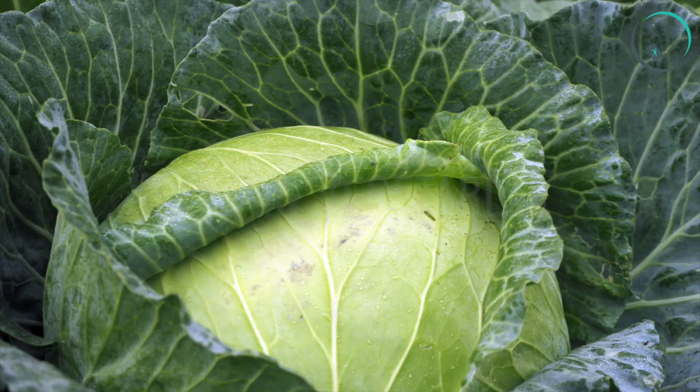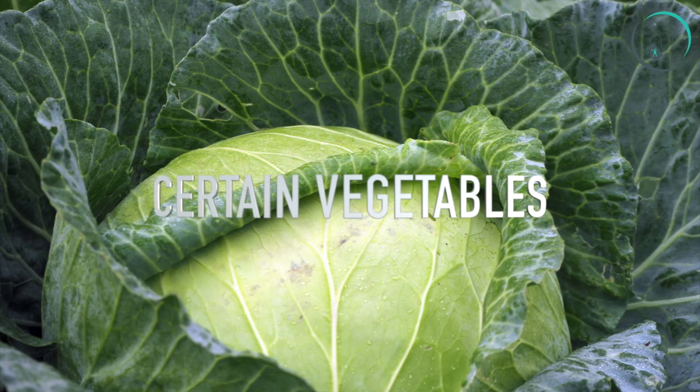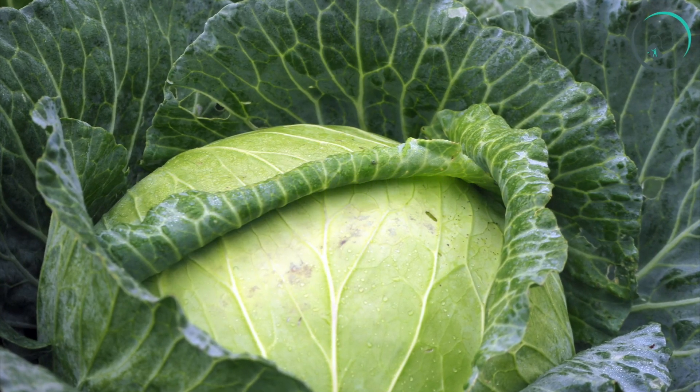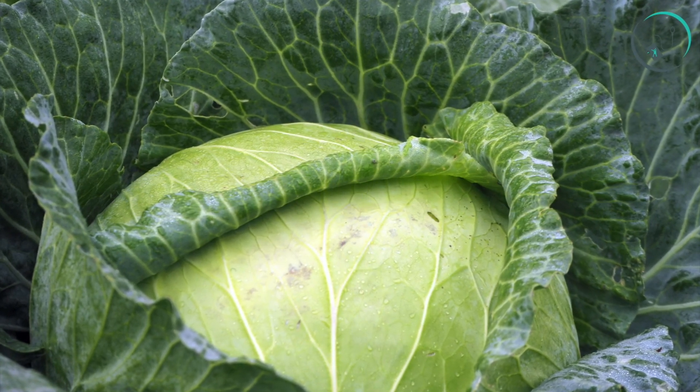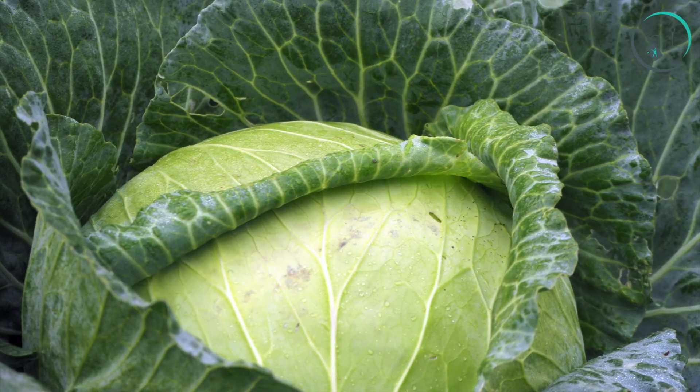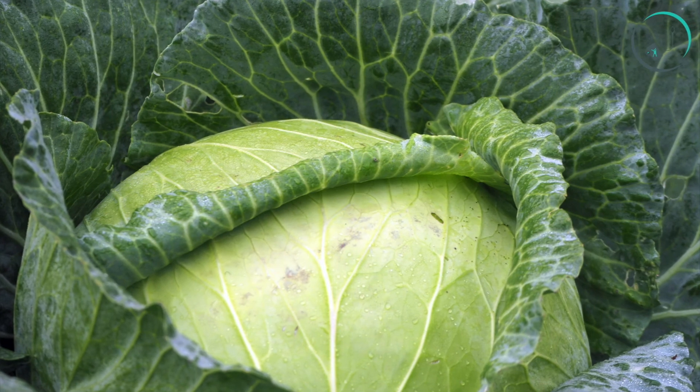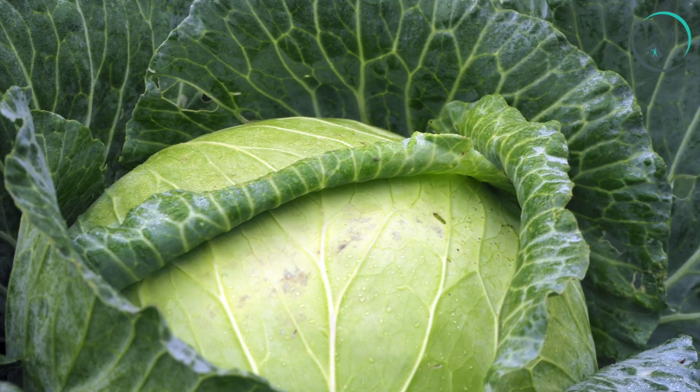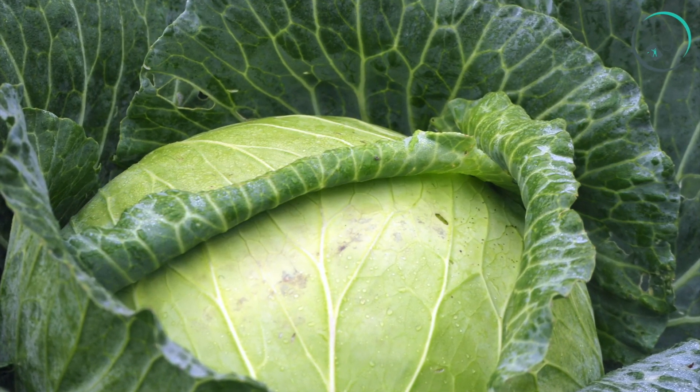6. Certain vegetables like cabbage and cauliflower contain goitrogens, which help in the normal functioning of the gland.